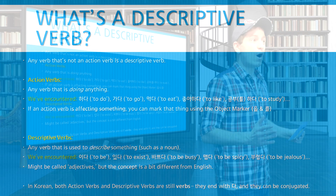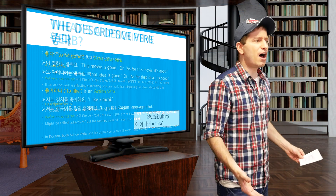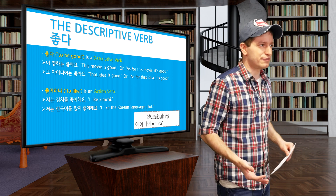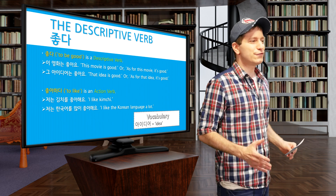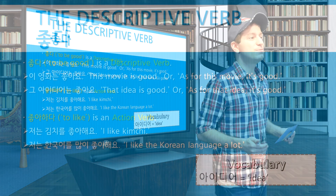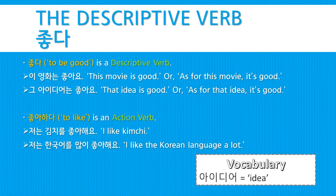So I wanted to introduce you to some very common and important descriptive verbs. The first one is 좋다, to be good. For example, 이 영화는 좋아요 — this movie is good, or as for this movie, it's good. 그 아이디어는 좋아요 — that idea is good, or as for that idea, it's good.